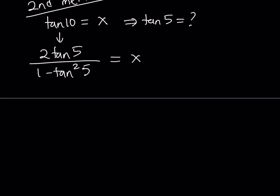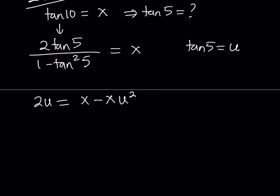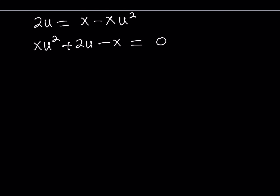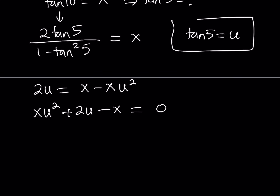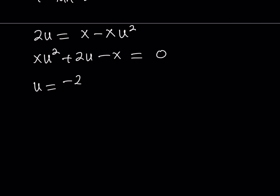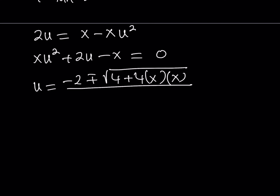Let's evaluate this. Let's call tangent 5 equal to u, so I can use 2u over 1 minus u squared equals x. Multiplying both sides: 2u equals x times 1 minus u squared, which gives x minus x times u squared. I'd like to make this a quadratic equation. Using the quadratic formula — since this probably isn't factorable — note that u is my variable and x is treated as a constant. So: u equals negative b plus or minus the square root of b squared, which is 4, minus 4 times a times c. c is negative x, so this becomes positive. Divided by 2a, which is 2x.